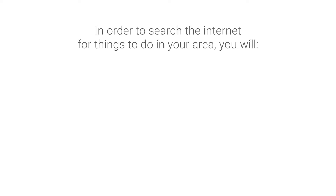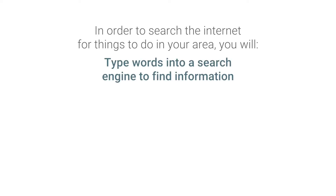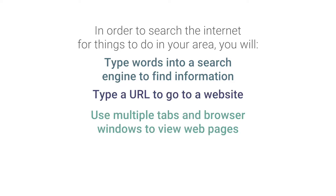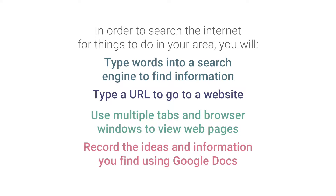In order to search the internet for things to do in your area, you will type words into a search engine to find information, type a URL to go to a website, use multiple tabs and browser windows to view web pages, and record the ideas and information you find using Google Docs.